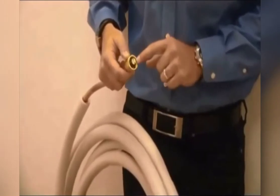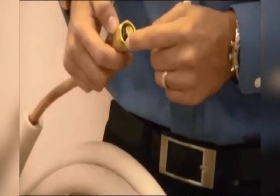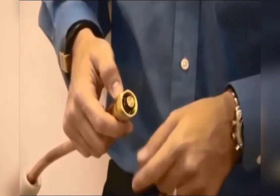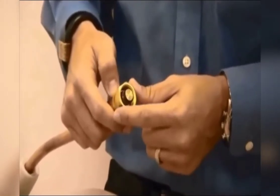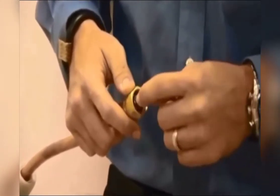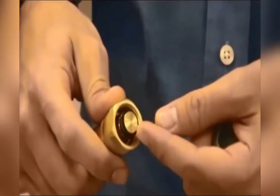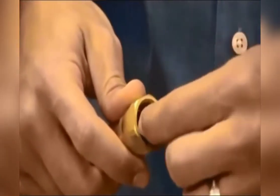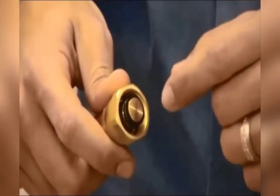First, inspect your threads and ensure that they're clean and undamaged to prevent any cross-threading when installing. Second, you want to inspect the O-ring sitting in this area. You want to ensure that it is sitting flat on the space and ensure it's not damaged to prevent any future leaks within the system.